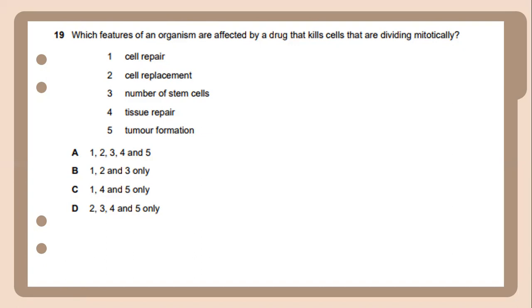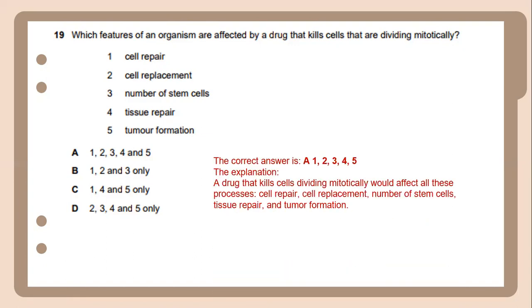Which features are affected by a drug that kills cells that are dividing mitotically? Is it cell repair, cell replacement, number of stem cells, tissue repair, tumor formation? All are correct answers. This can be explained through a drug that kills cells dividing mitotically could affect all these processes: cell repair, cell replacement, number of stem cells, tissue repair, and finally, tumor formation.